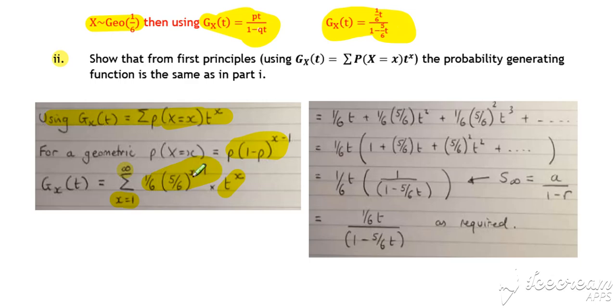Substitute x is 1 in, substitute x is 2 in, etc. So we get our expanded form of our summation. We can then take out a factor of 1 sixth t, leaving us inside the brackets with this expression.